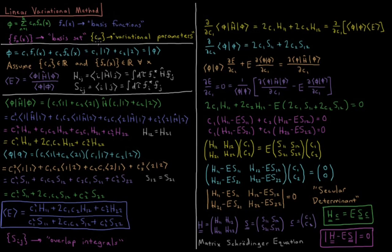Every one of these values of c is going to be a parameter that we can use to help minimize our energy using the variational theorem. We're going to do this for just the simplest case of two variational parameters: phi equals c1 f1 of x plus c2 f2 of x. In Dirac notation we'll represent this as c1 times state 1 plus c2 times function 2, equal to our wave function phi as a ket vector.